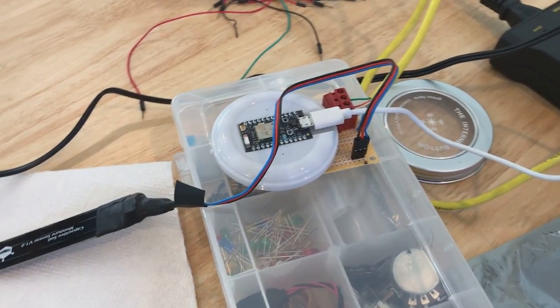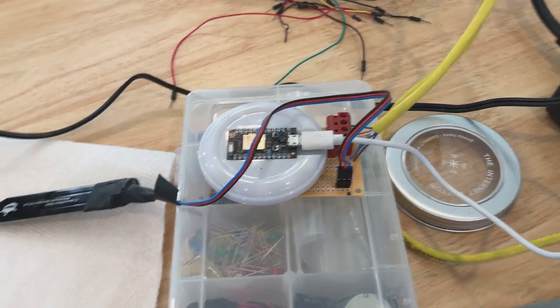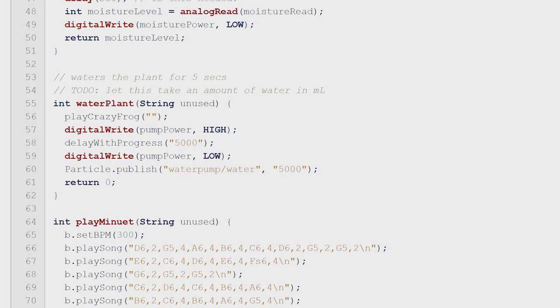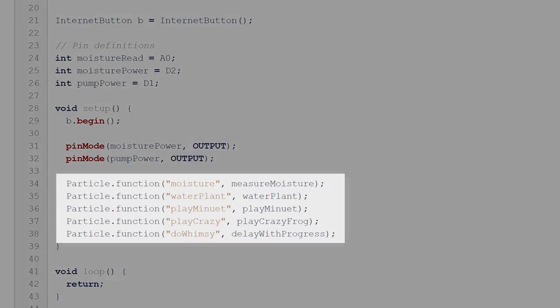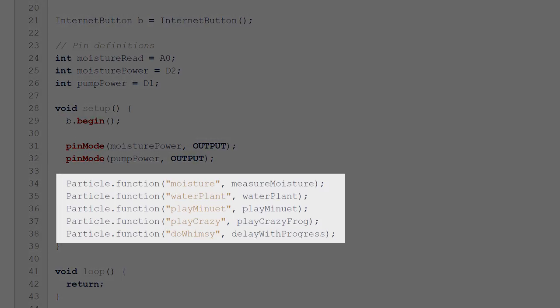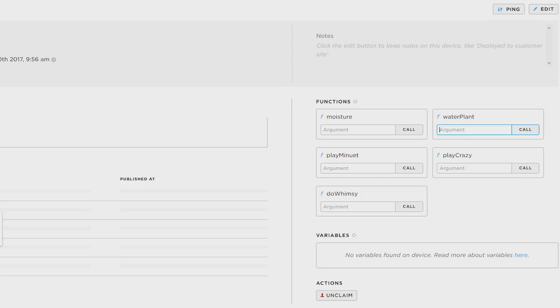Now, onto the software. This is the real selling point in Particle's platform. We can program the photon like a regular Arduino, but we can declare functions to be callable through Particle's platform. All we have to do is expose it using particle.function, and right after flashing it to the photon, we can call our function by hitting an endpoint on Particle's servers.